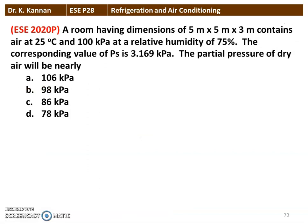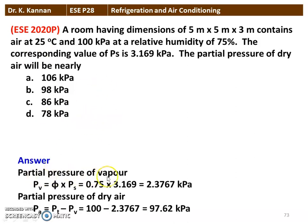Next question: A room of dimensions 5×5×3 m contains air at 20°C and 100 kPa with relative humidity of 75%. The saturation pressure PS = 3.169 kPa. Partial pressure of water vapor: PV = φ × PS = 0.75 × 3.169 = 2.3767 kPa. Partial pressure of dry air = total pressure − vapor pressure = 100 − 2.3767 = 97.60 kPa.